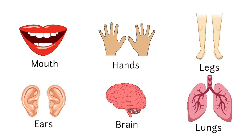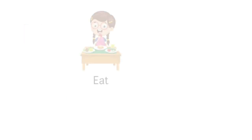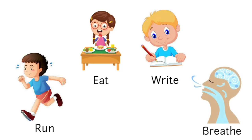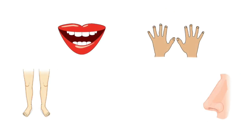All these parts are very important to carry out different functions in our day-to-day life. These different parts of the body help us to eat, write, run, breathe, and many more activities. Therefore, each body part has its own unique functions, and these different parts of our body are called organs.